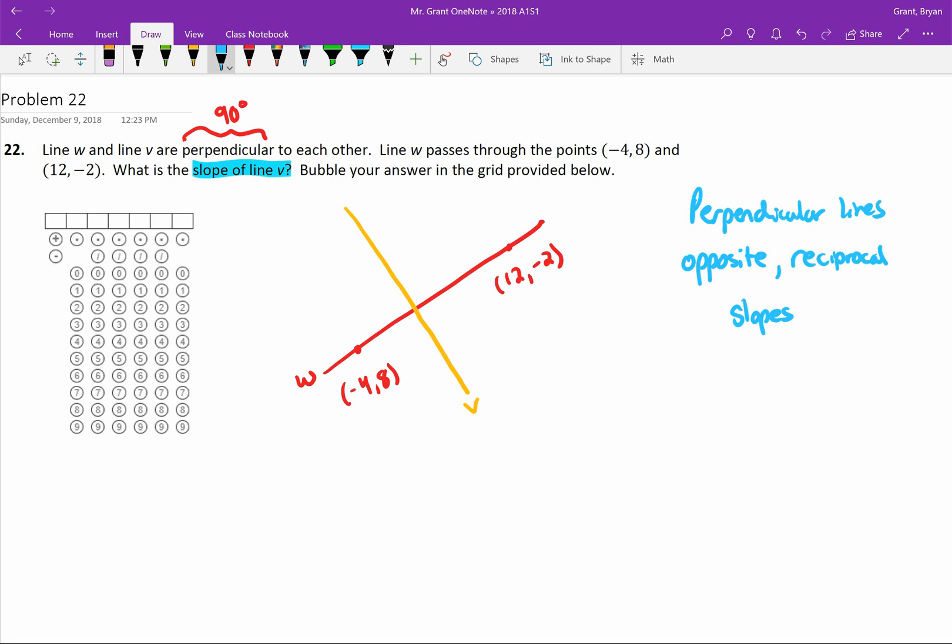So that means that if I know the slope of W, I just find the opposite of that. I change the sign. And then the reciprocal, I flip it. And now I know the slope of V. So in order to find the slope of line V, we're going to start with the slope of line W.